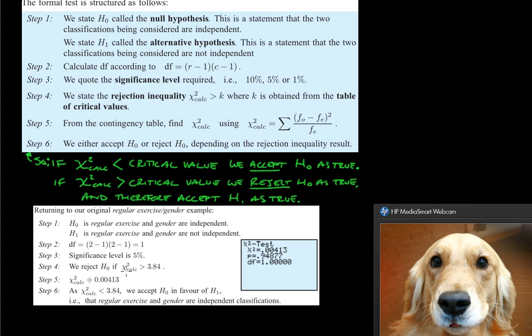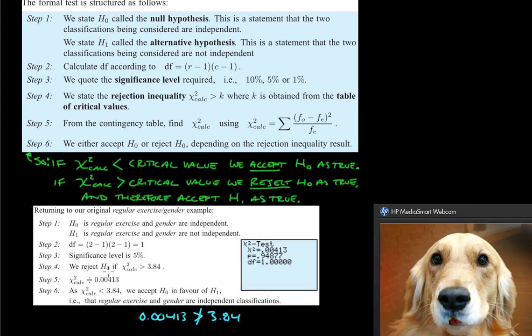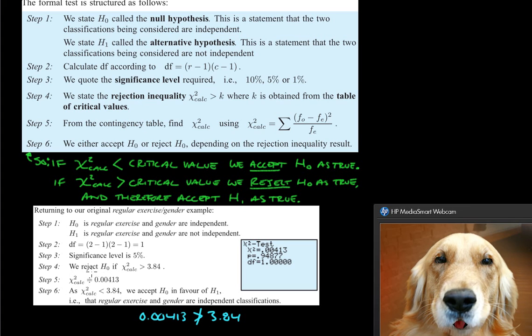Which, so if you put the 0.00413 in here, so we have 0.00413 and we have the greater than 3.84. That is not true, right? This is not bigger than that. So it says we reject our null hypothesis if this is true. Since that's not true, then we don't reject it, which means we keep our original hypothesis.